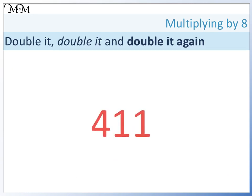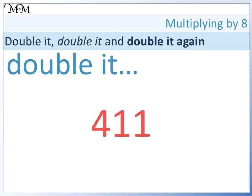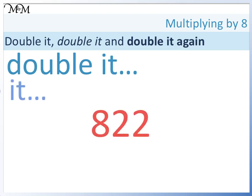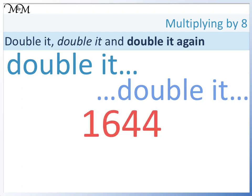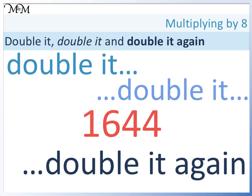411 times 8: double it equals 822. Double it equals 1,644. Double it again equals 3,288.